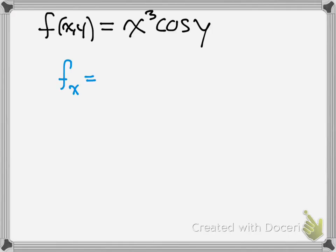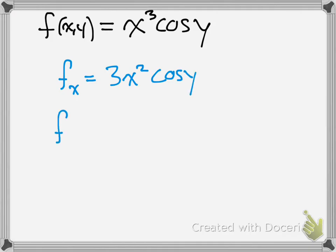So the partial derivative of f with respect to x: take the derivative of 3x cubed — that would be 9x squared — and since we're treating cosine y as a constant, we leave it alone. Now the double partial derivative with respect to x: take the derivative of 9x squared, and that would be 6x cosine y. Don't take the derivative of cosine y — we're treating it as a constant.